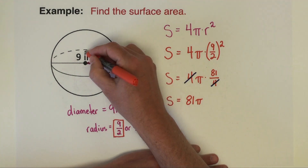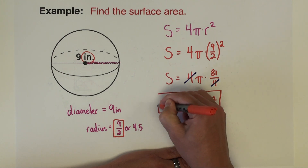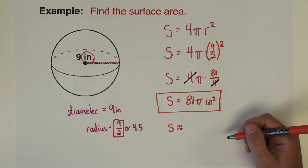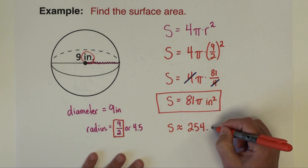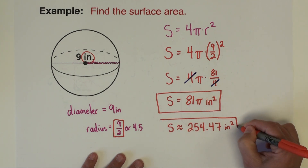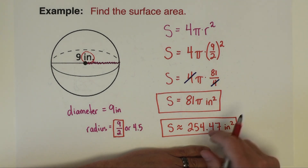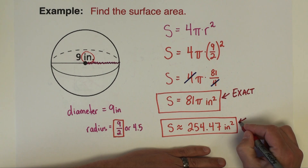We need to put units on it — the units in the problem are inches, and since this is area we want inches squared. So the exact answer is 81π in². If we want an approximation, 81 times pi on the calculator gives approximately 254.47. If the directions say to round to the nearest blank, you'll need to use the calculator. Otherwise, an exact value in terms of pi like this is probably preferred.